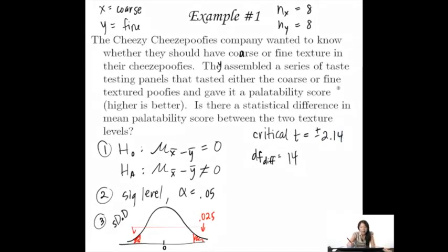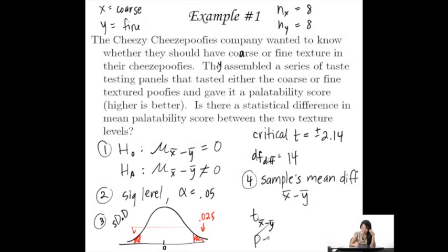So now that we have that, then we could go ahead and look at the actual samples themselves. So step four is we need to find the samples mean difference. So we need to find x-bar minus y-bar. But we also need to find this mean difference is t. So the t sub x-bar minus y-bar. We need to find that, as well as the p-value.